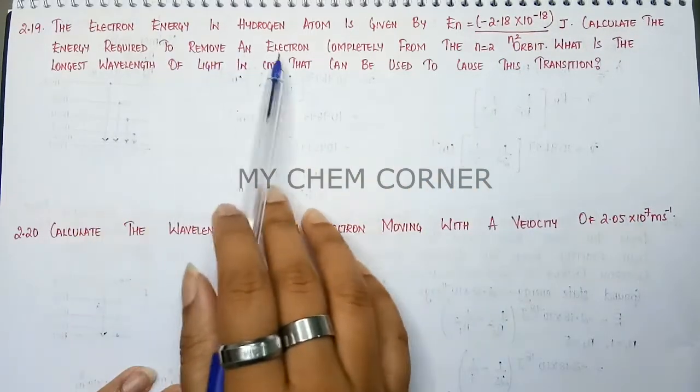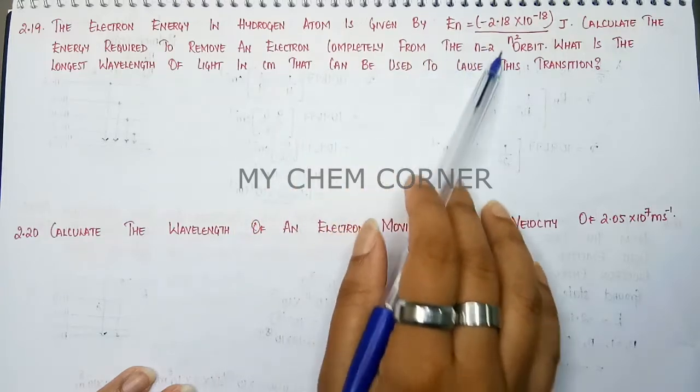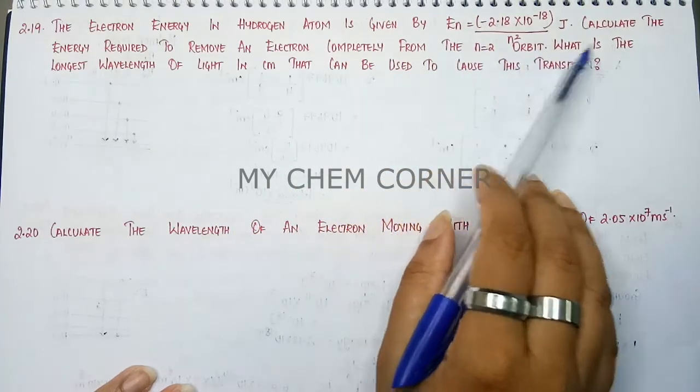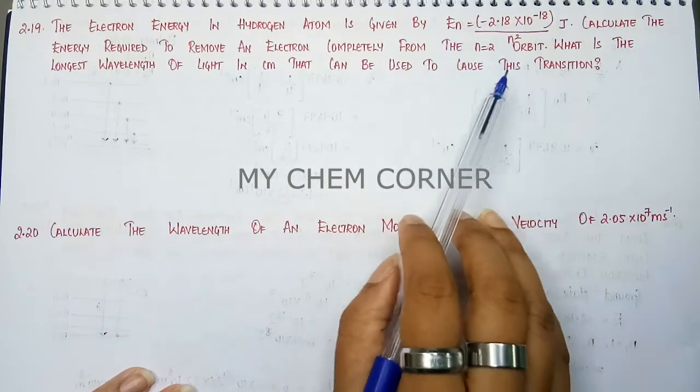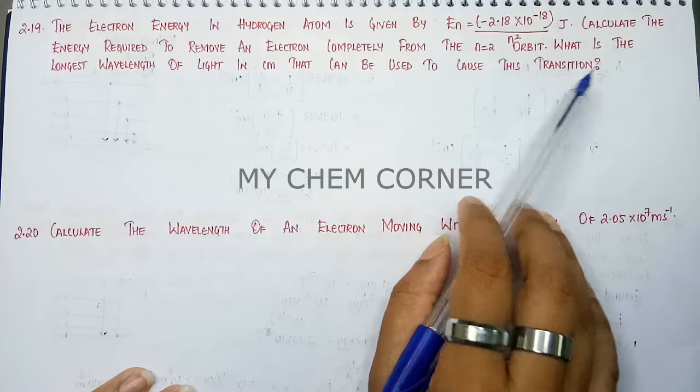Calculate the energy required to remove an electron completely from N equals 2 orbit. What is the longest wavelength of the light in centimeter that can be used to cause this transition?